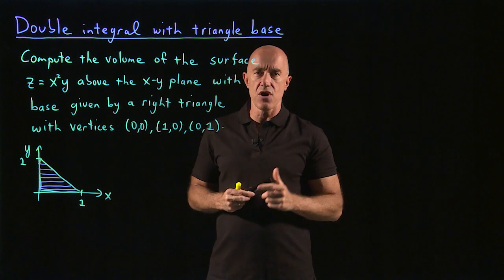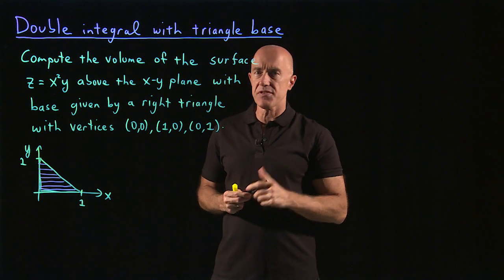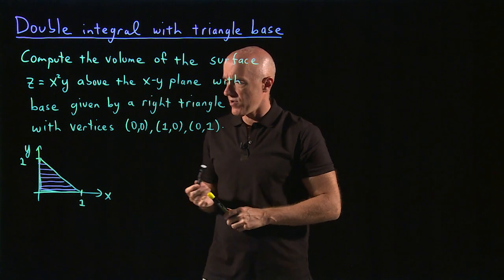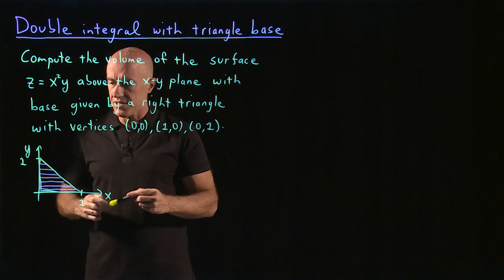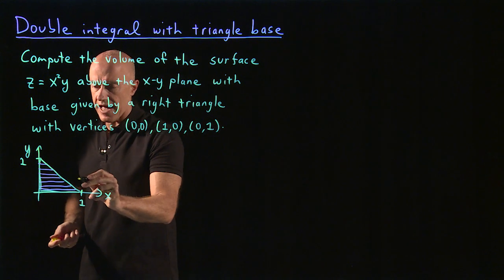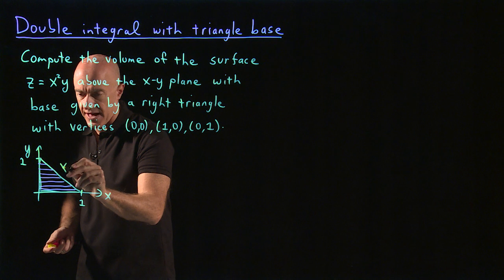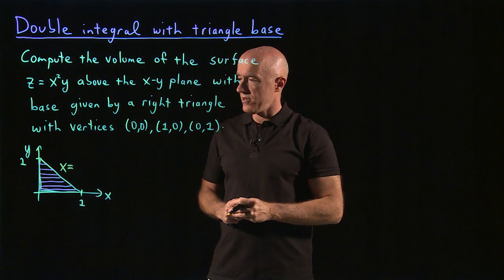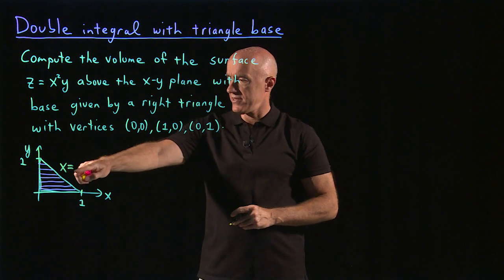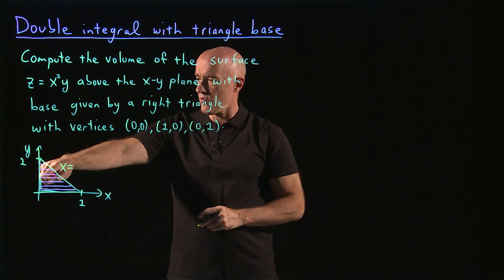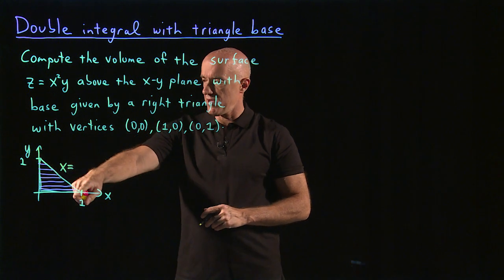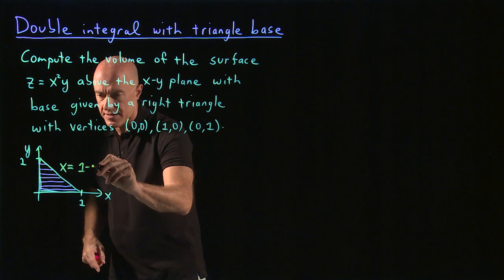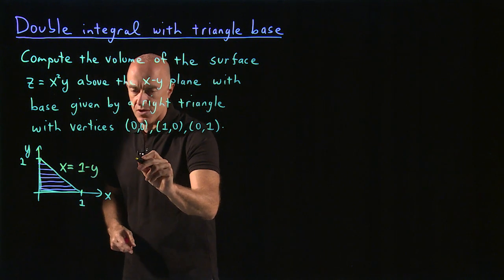So if we integrate along x first, we have to specify the limits of integration. Here, we're integrating x from 0 to this line. So we're going to have to know what is the x value on this hypotenuse of the triangle. So this is equal to x is going to be 0 when y equals 1 and x is going to be 1 when y equals 0. So this is 1 minus y.